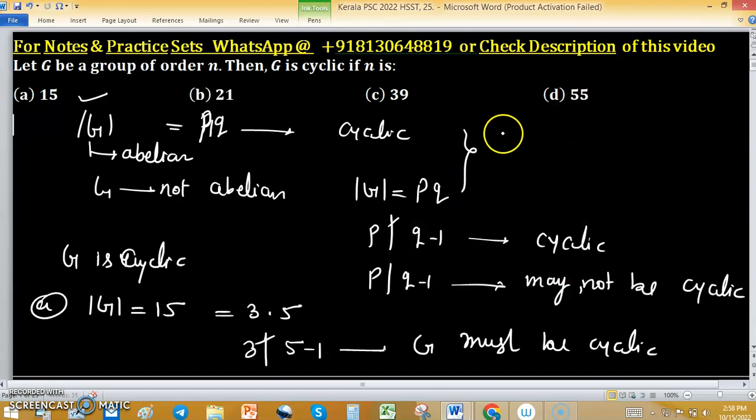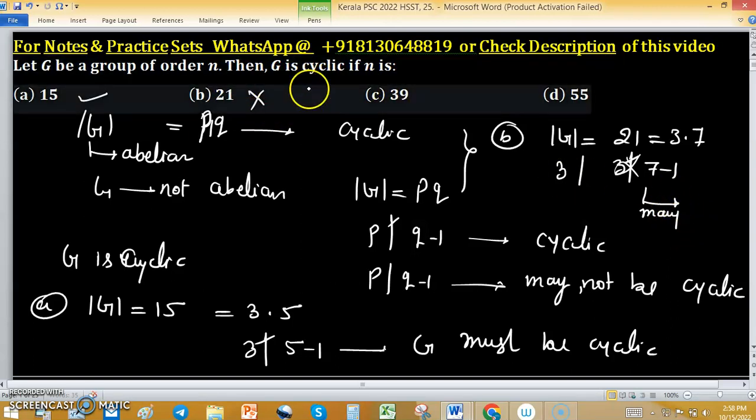Now let us check option B. Order of G is 21, we can write 3 into 7, but 3 divides 7-1. In this case G may or may not be cyclic, but it is confirmed G is cyclic.